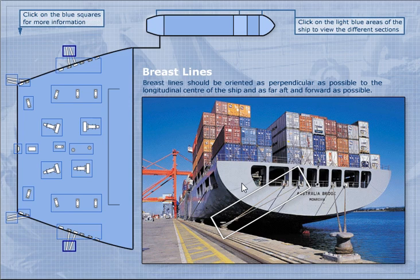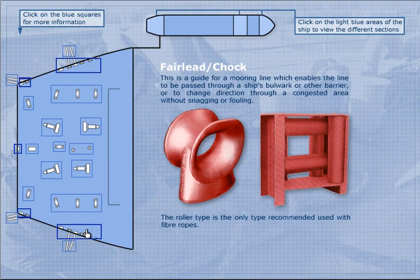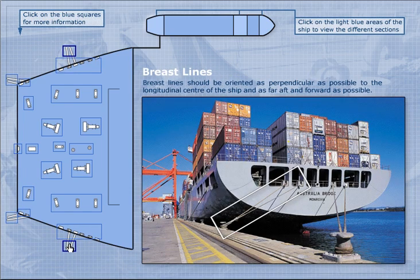Breast lines should be oriented as perpendicular as possible to the longitudinal centerline of the ship and as far forward and aft as possible. Here you can find stern lines. Stern lines are mooring lines leading ashore from the after end or poop of a ship, often at an angle of about 45 degrees to the fore and aft line. Here is the fairlead, breast line on the starboard side and the port side.